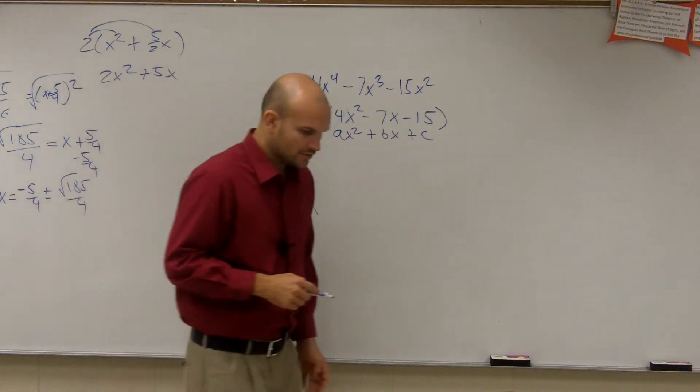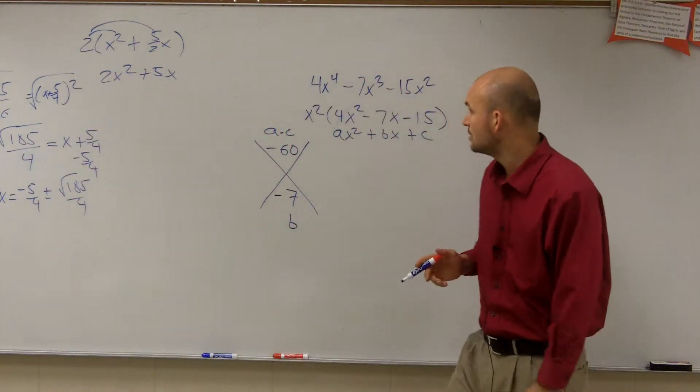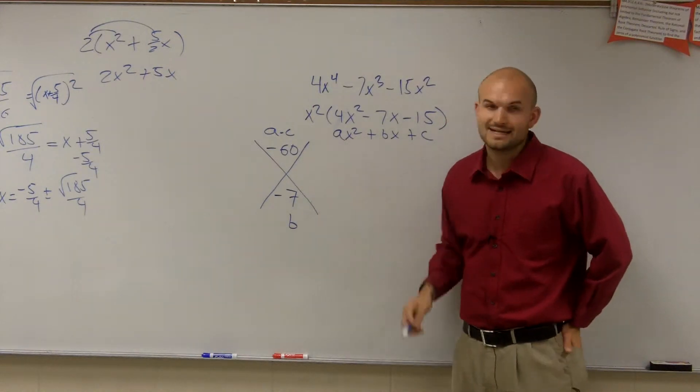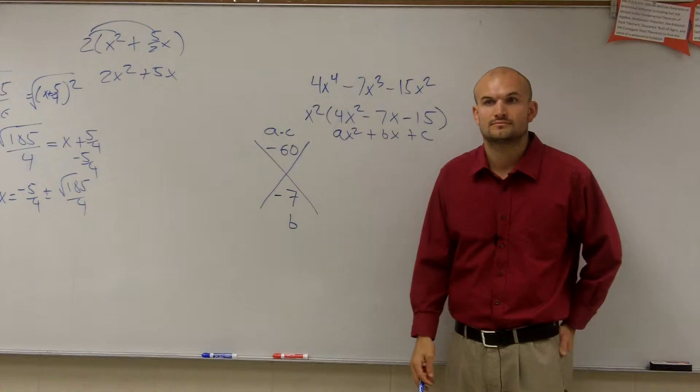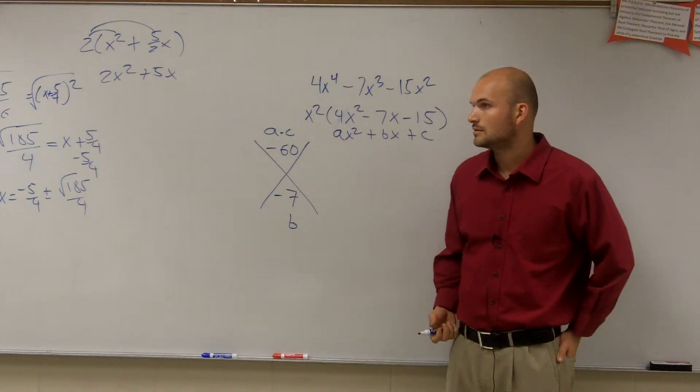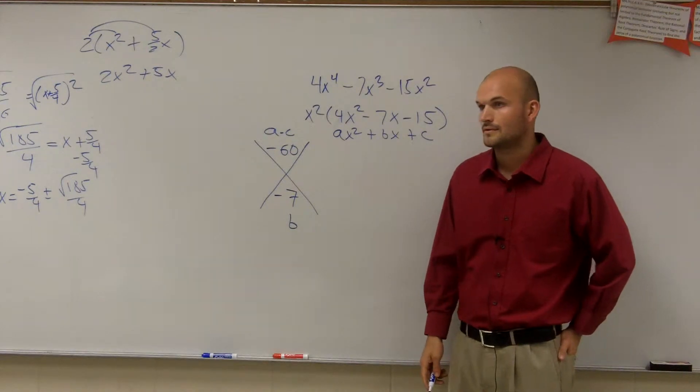Then you look at what numbers multiply to give you negative 60, but then add to give you negative 7. And then you think. Oh, yeah. 12 and 5.